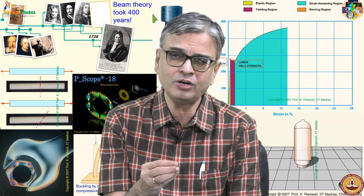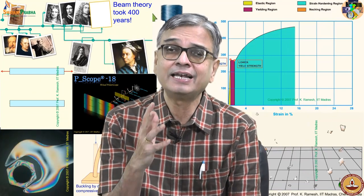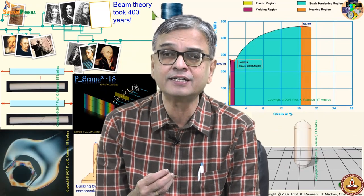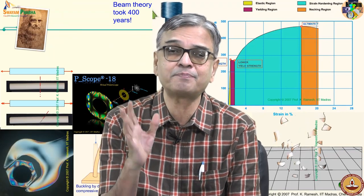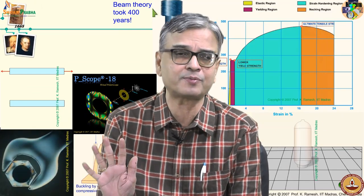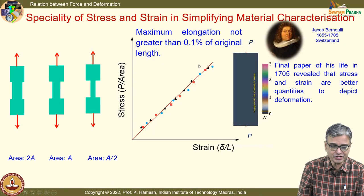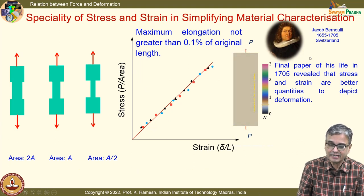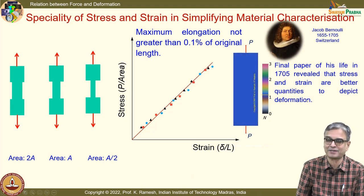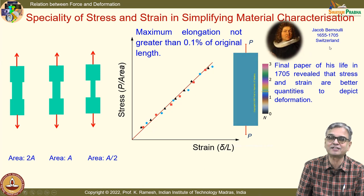If you had mathematically expressed it for the complete range, strength of materials would not have progressed. You have to look at it from the practical point of view: our operating conditions require very small loads. You cannot live in the comfort of rigid body mechanics — you must bring in deformation. That is the first baby step: bring in small deformation. This simple change took Bernoulli his entire lifetime; his beam theory was his final paper.